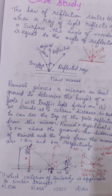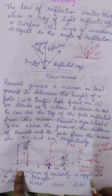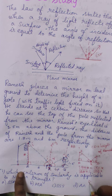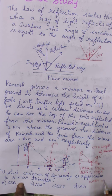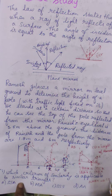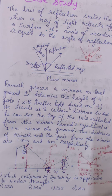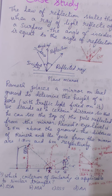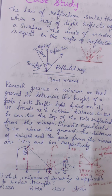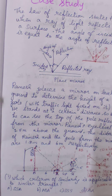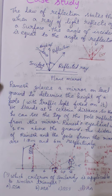We have proved angle A equals angle C, and angle B equals angle D. So all three angles are equal. Therefore triangle A, B, X is similar to triangle C, D, X based on the AA similarity criterion. We are done with the first question and will now move on to the second one.